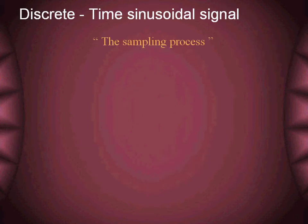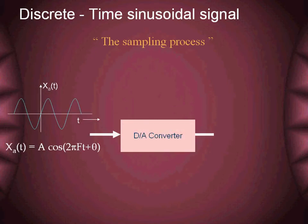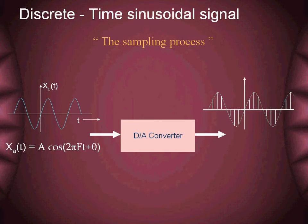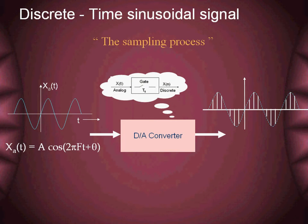Moving from continuous time to discrete time signals, the sampling process comes into picture. In practice, sampling is performed by applying the continuous signal to an analog-to-digital converter, which results in a sequence of numbers called samples that represents the original signal. This sampling is the basic operation involved in the field of digital signal processing. Simply, sampling can be put as gating of the input signal where the gate is triggered on after a specific time interval called the sampling period, denoted as Ts.